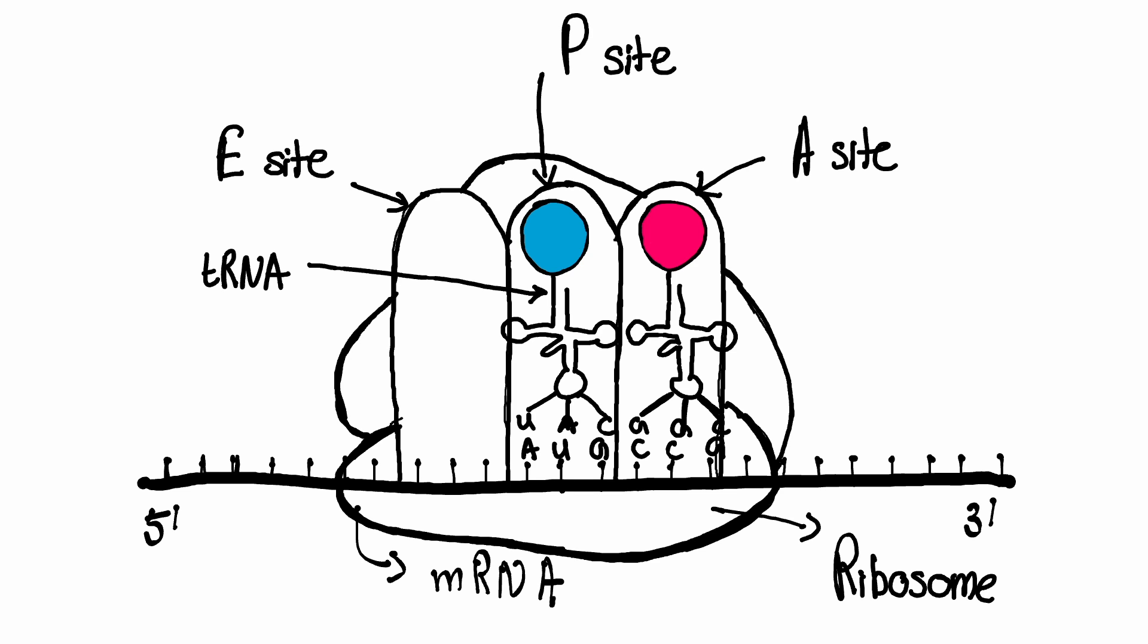The peptidyl transferase enzyme removes the growing amino acid chain from the tRNA molecule in the A site of the ribosome and adds it to the amino acid attached to the tRNA in the P site.